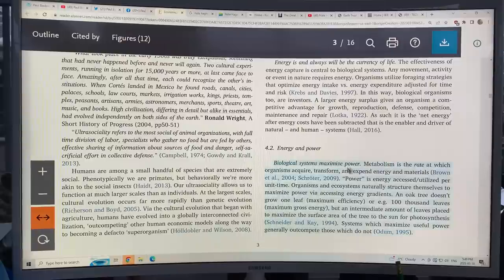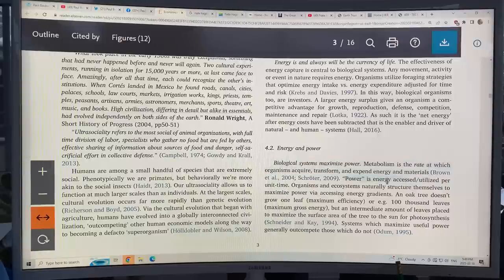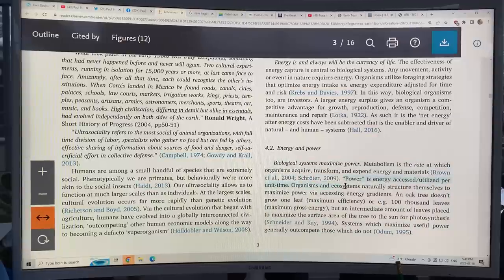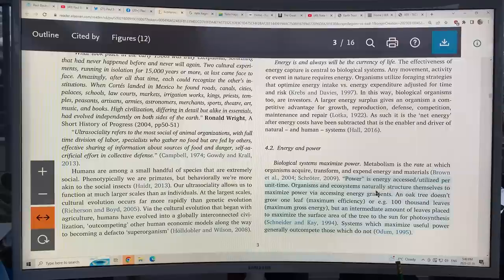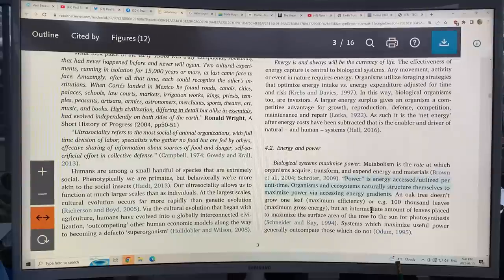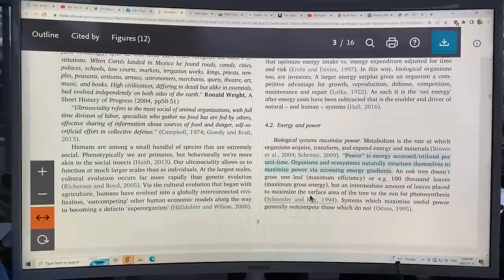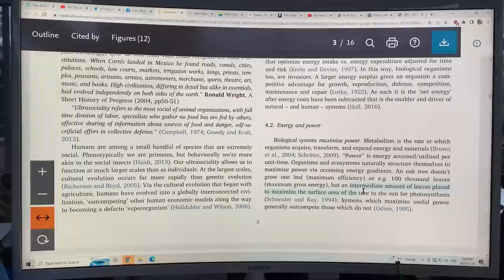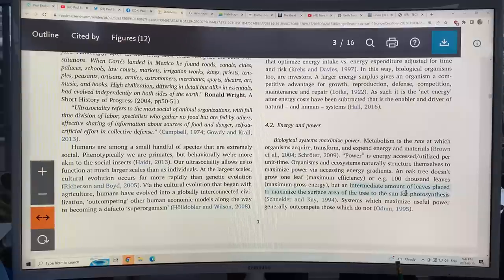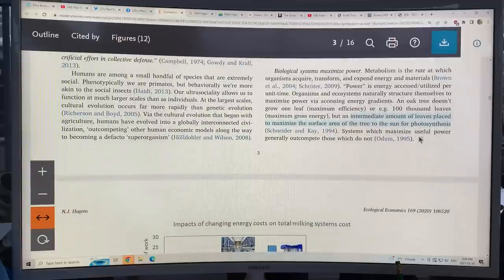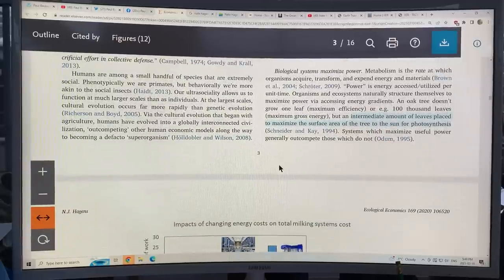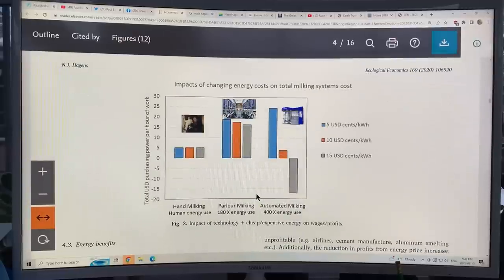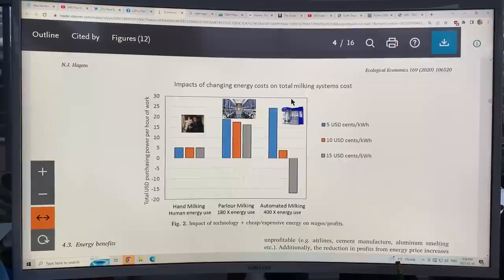So biological systems maximize power. Metabolism is the rate at which organisms acquire, transform, and expand energy and materials. Power is the energy per unit time. Ecosystems and organisms structure themselves to maximize power by accessing the energy gradient. Like an oak tree doesn't grow one leaf, that would be maximum efficiency. Or 100,000 leaves, that would be maximum gross energy. But it has an intermediate amount of leaves that maximizes the surface area of the tree to the sun for photosynthesis.